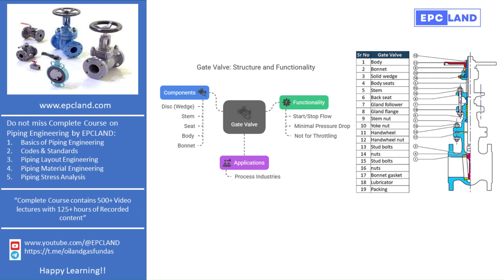However, when you want to shut off the flow, the gate lowers down and makes full contact with the seat. To create a proper seal, the gate must make 360-degree surface contact with the seat inside the valve. This ensures a tight shut-off and prevents leakage.